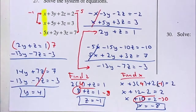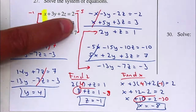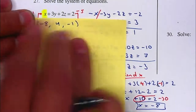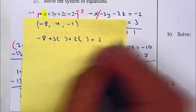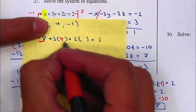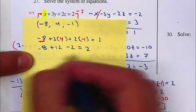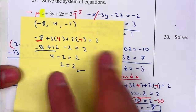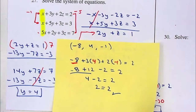To double-check, plug in X equals negative eight, Y equals four, and Z equals negative one. Using the first equation: negative eight plus 3 times 4 plus 2 times negative one equals two. That's negative eight plus 12 minus two — four minus two equals two — two equals two, and that's correct. To fully verify, you can plug into all three equations, but as long as it checks out in one, most likely you're correct on all three.